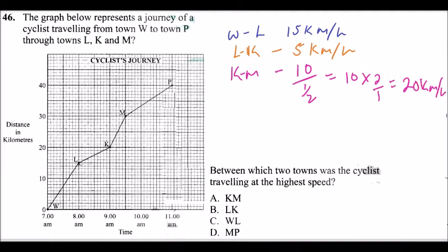And the last part, that is we have M to P from 9:30, that is 9:30 to 11. That is 1:30. That is 1.5 hours. He was only able to cover 10 kilometers.